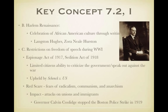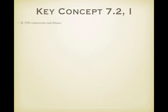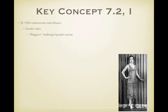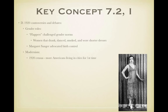In the 1920s there were controversies around gender roles. Flappers challenged gender norms by drinking, dancing, smoking, and wearing shorter dresses. Margaret Sanger was a controversial advocate of birth control. Issues of modernism arose as the 1920 census showed more Americans living in cities than ever before, and many workers lost autonomy due to the assembly line, making them easily replaceable.